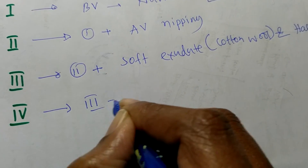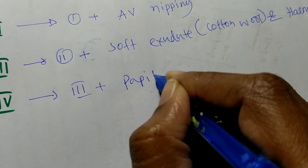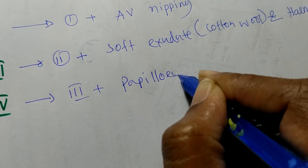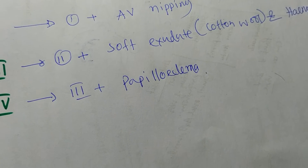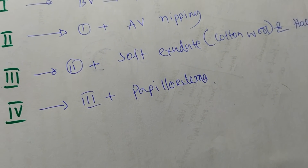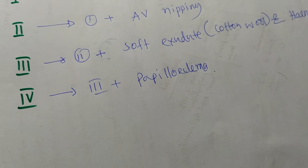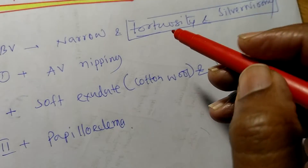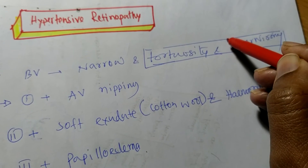Stage four means stage three plus papilloedema. So now for the summary: stage one means silver wiring.